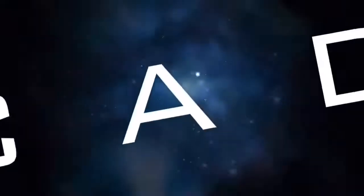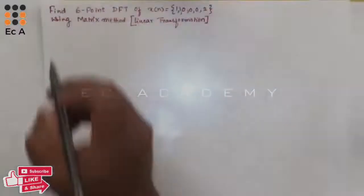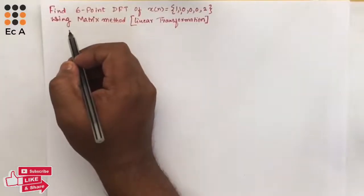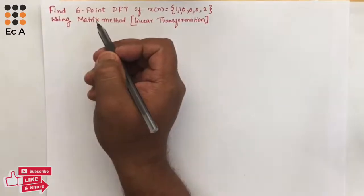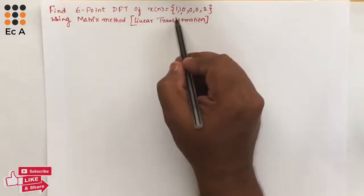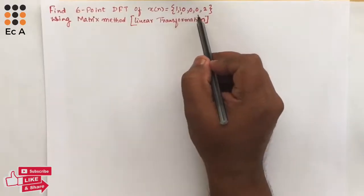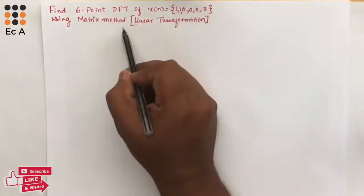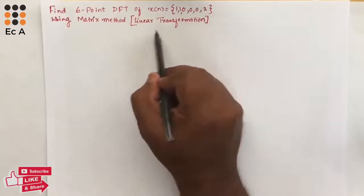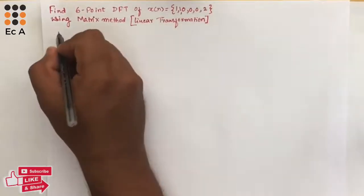Hello friends, welcome to ESEA Academy. In this lecture, let us understand how to find the 6-point DFT for the given sequence x[n] = {1, 1, 0, 0, 0, 2} using the matrix method, which is the same as the linear transformation method. To find the N-point DFT,